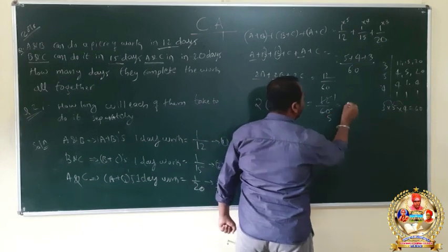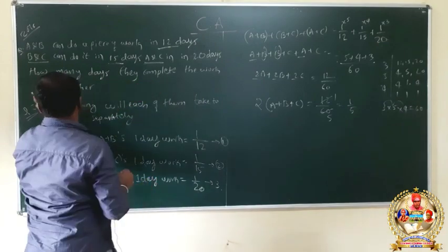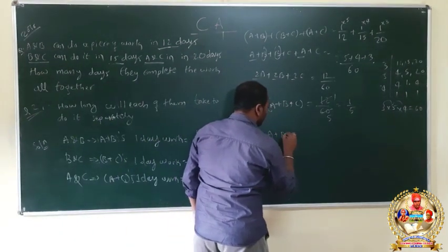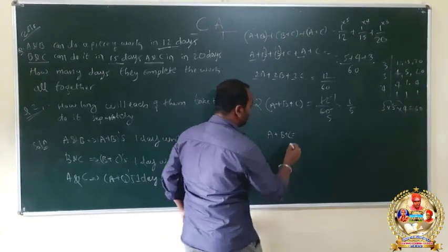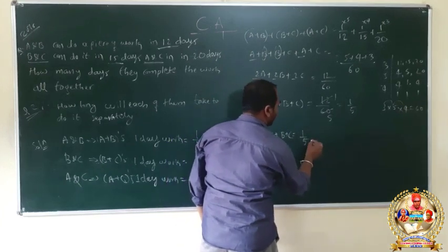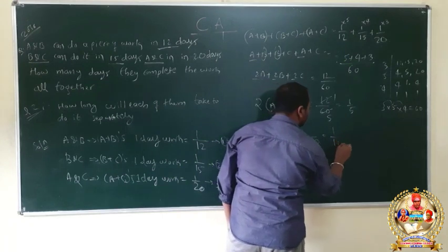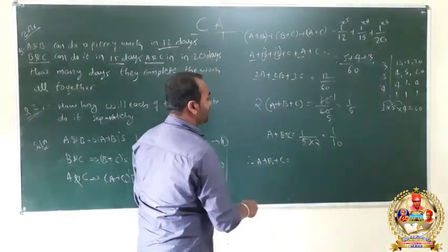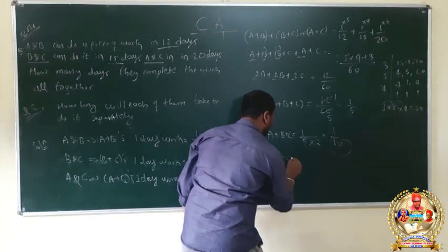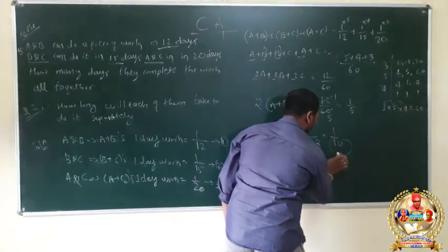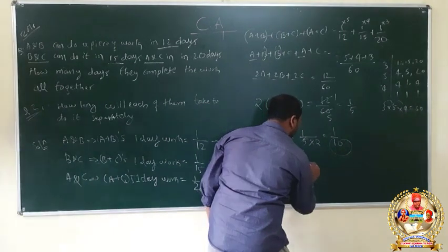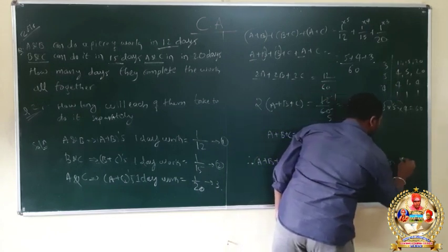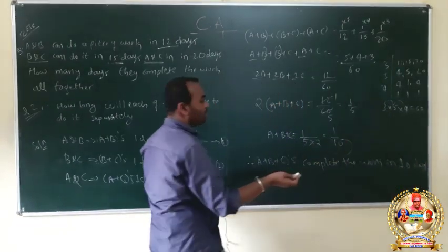So A plus B plus C equals 1 by 10. Therefore A, B, and C together will complete the work in 10 days.